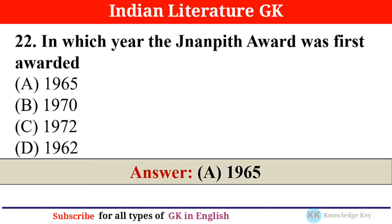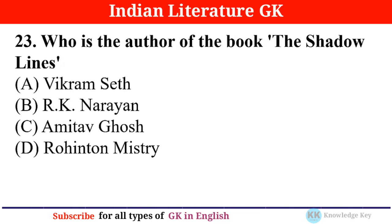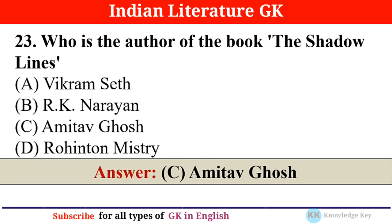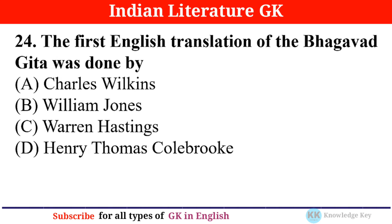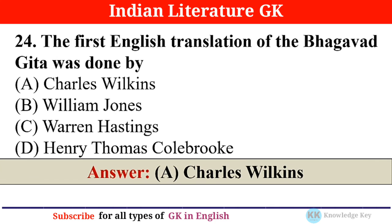Answer A: in 1965. Question number twenty-three: Who is the author of the book 'The Shadow Lines'? — answer C: Amitav Ghosh. Question number twenty-four: The first English translation of the Bhagavad Gita was done by — answer A: Charles Wilkins.